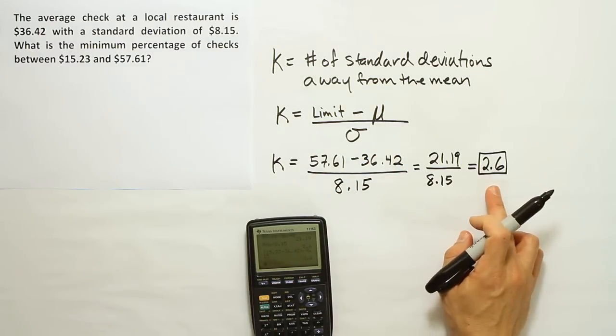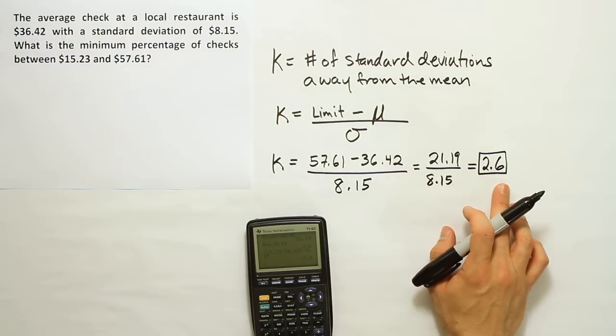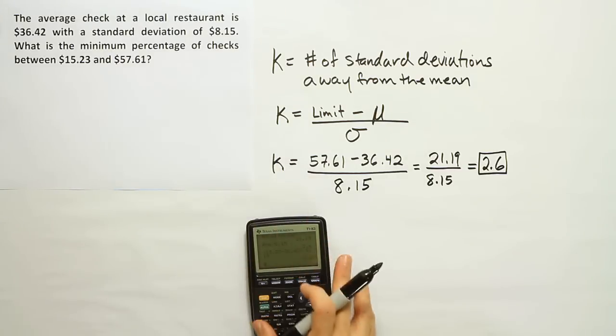And when I'm done, I get negative 2.6 when I use the lower limit. And this tells me that this is a good interval to use Chebyshev's theorem with. So we have all our criteria met. We have an interval and it's symmetric about the mean, and we're looking for the minimum percentage.